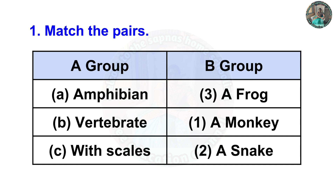First question is match the pairs. Group A and Group B. Amphibian is a frog. Vertebrate is a monkey. Which has scales — a snake.